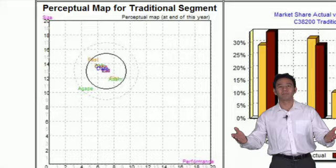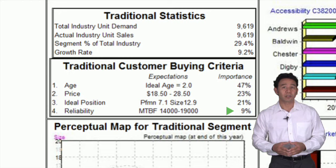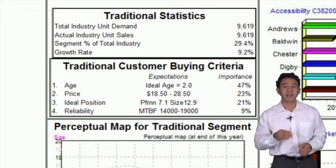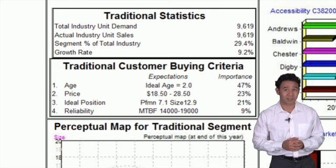How about reliability? It's not very important to this segment. And while it's easy to change, it's also related to material cost. In the traditional segment, price is more important than reliability. In a segment like Performance, it's the reverse. Reliability is more important than price.